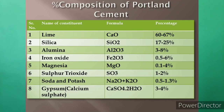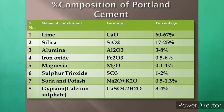The average percentage composition of Portland cement is: lime 60–67%, silica 17–25%, alumina 3–8%, iron oxide 0.5–6%, magnesia 0.1–4%, sulfur trioxide 1–2%, soda and potash 0.5–1.3%, and gypsum (calcium sulfate) 3–4%.